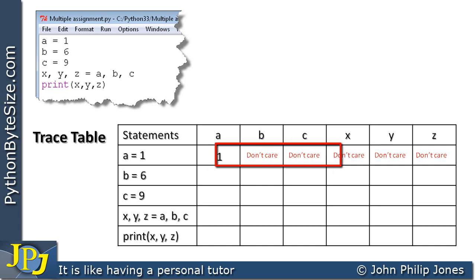If you look at all the other columns, you see I've written down don't care. This comes from what's called a don't care condition. It doesn't mean I don't give a monkey's what's in b, c, x, y, and z. It's just that those variables don't exist yet.